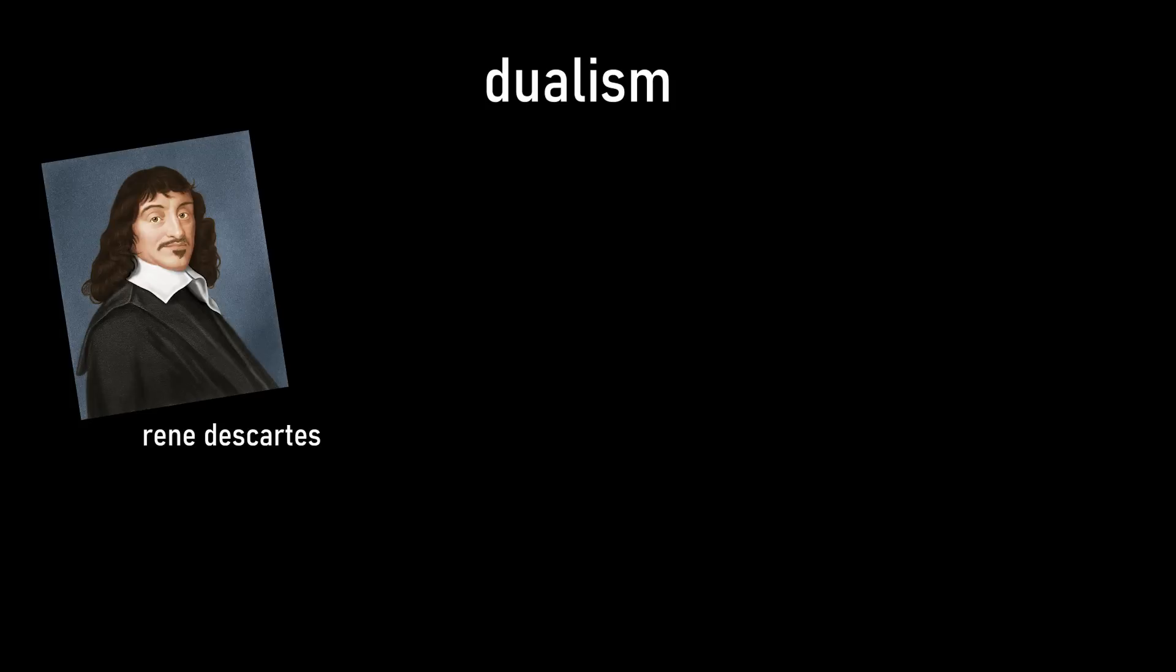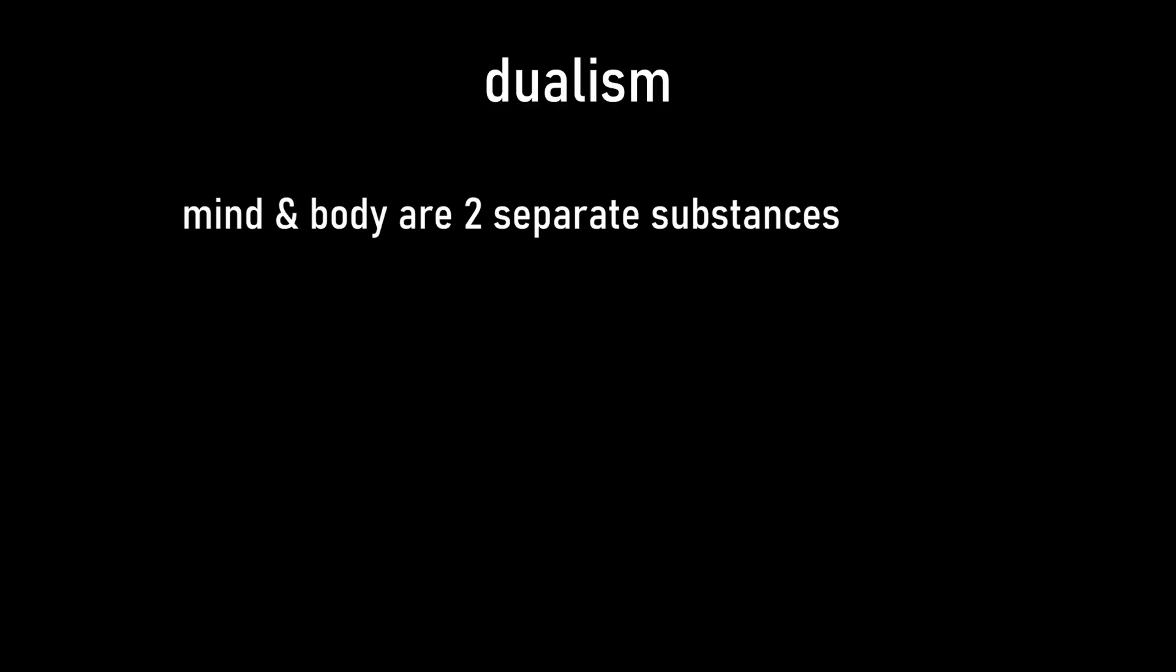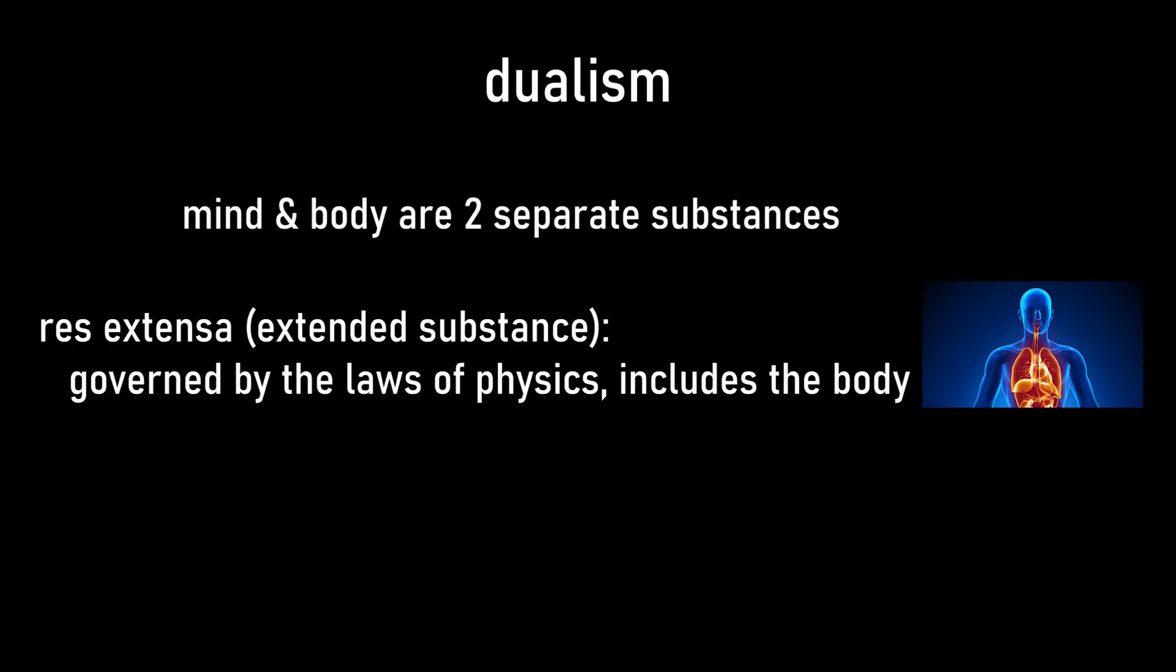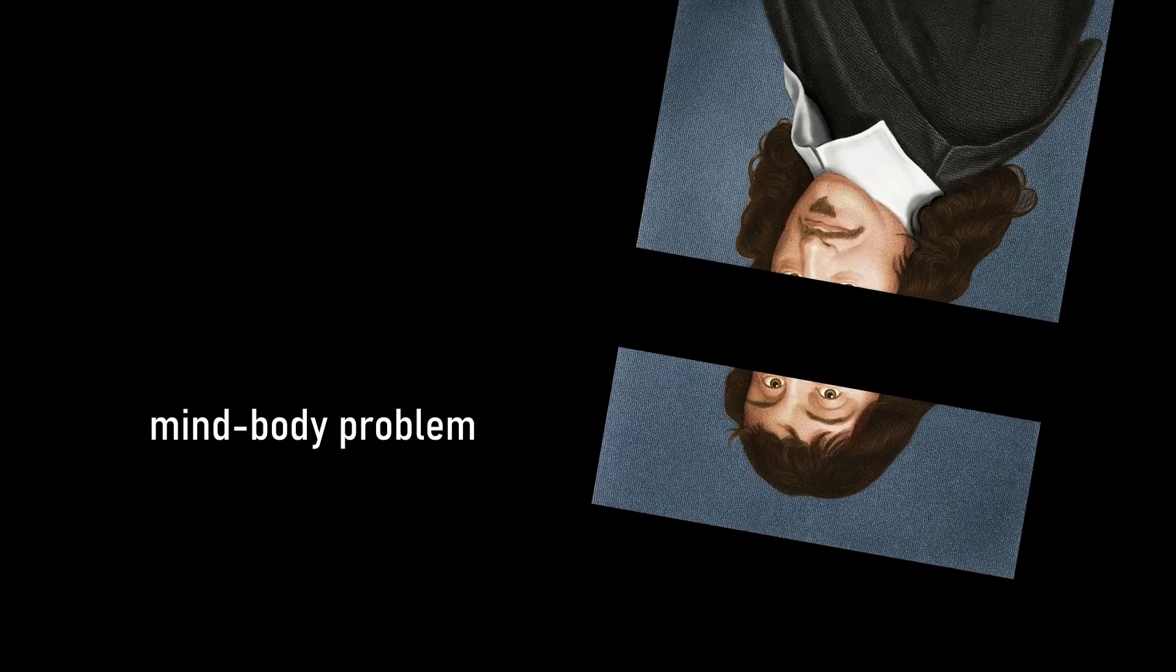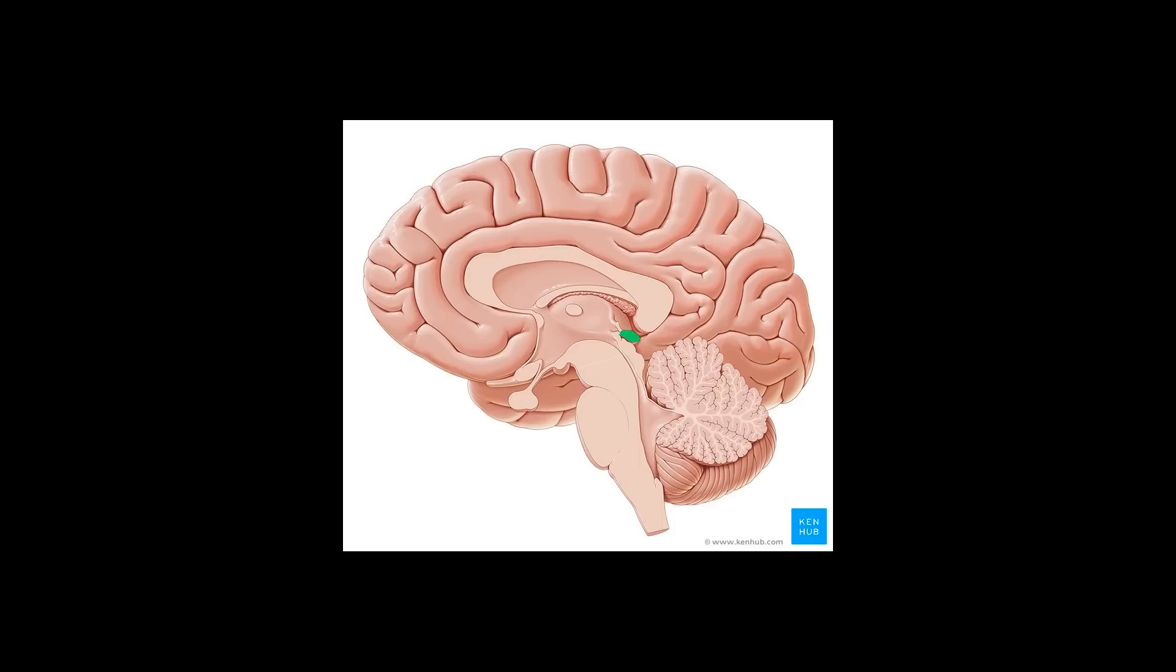Dualism, famously supported by philosophers like Rene Descartes, is the stance that the mind and the body are fundamentally two separate substances, with the body belonging to the physical world and governed by the laws of physics and nature, but the mind not. One can exist without the other. You can have a mind without a body. Descartes is also often credited for coming up with the mind-body problem, which is the natural follow-up question of, well, if the mind and the body are separate substances, then how do they interact with each other?